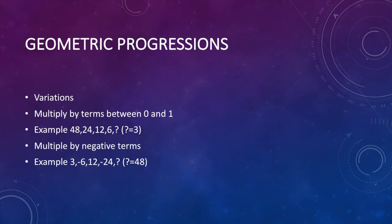The other case is when the fixed number is negative. In this case, terms alternate between being positive and negative numbers. For example, 3, minus 6, 12, minus 24, question mark, question mark equals 48. In this case, each term is multiplied by minus 2 to get the next term.